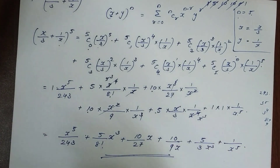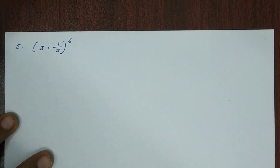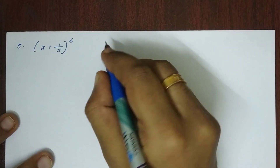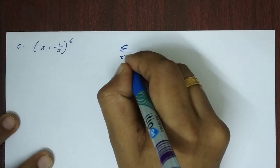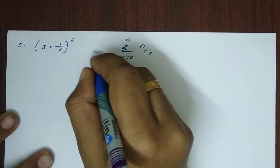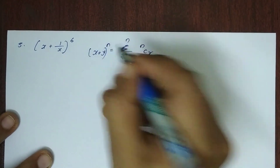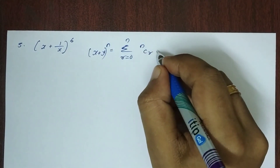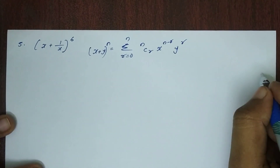So this is the answer for that question. The next question is (x + 1/x) raised to 6, to be expanded using the binomial theorem. The binomial theorem states: (x + y) raised to n equals summation r = 0 to n of nCr times x raised to (n minus r) times y raised to r.